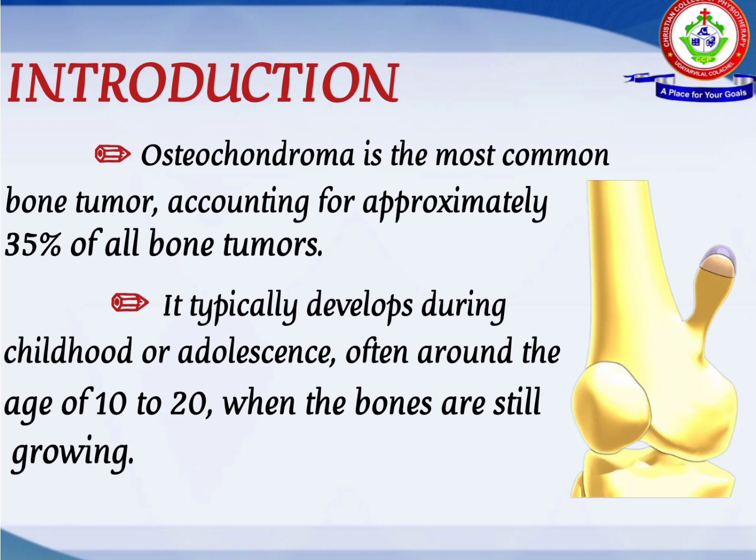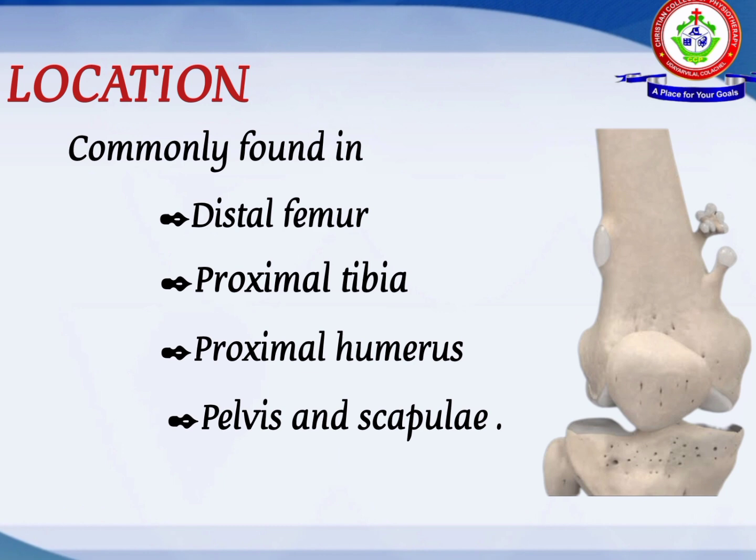Next we see about the location of the tumor. Osteochondroma is commonly found in the distal femur, proximal tibia, proximal humerus, pelvis, and scapulae.